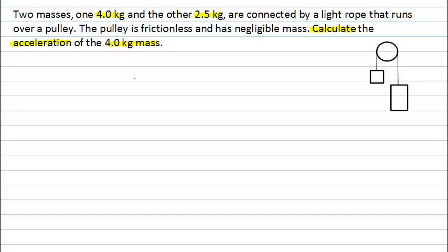One of them is that these two masses are connected by a light rope. We'll see what that might mean in a minute. Additionally, the pulley that's involved is frictionless and also has negligible mass. And again we'll see what that might mean soon.